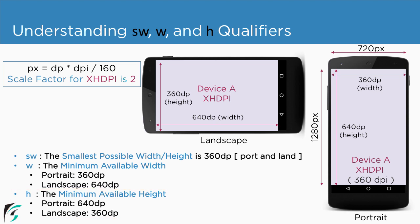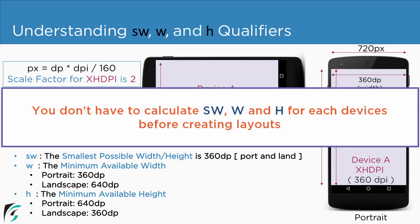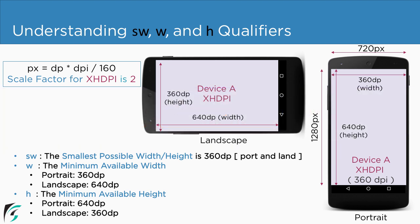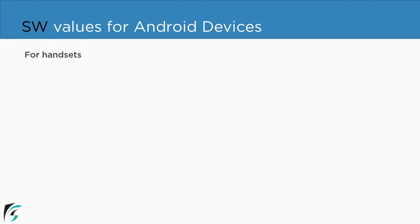You might ask: do I have to remember all of these values for other densities as well? The answer is no. You just have to remember the definitions — what is SW, what is W, and what is H. To create layouts based on these values, we have some generalized patterns for Android devices. For handsets, the value of SW is less than 600 dp. Always remember that.